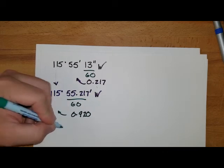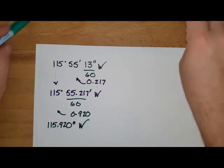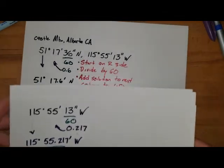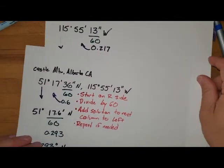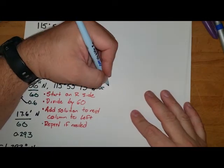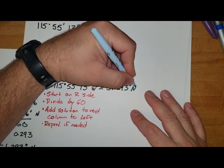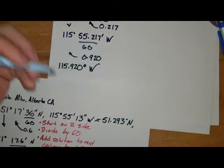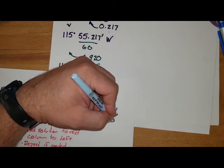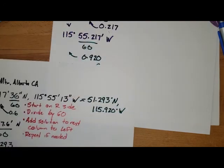All right, and so now we've taken our degrees, minutes, seconds and converted them to decimal degrees. So Castle Mountain there in Alberta is at that degrees, but that is also going to be equal to 51.293 degrees north and 115.920—and that zero shows that we're being a little bit more accurate—degrees west.